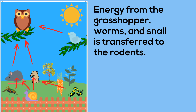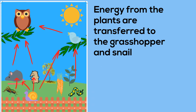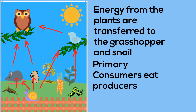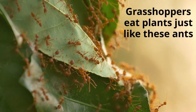Birds eat a larger variety of organisms including worms and also snails. The birds and rodents are secondary consumers because they consume primary consumers. Grasshoppers and snails are primary consumers because they eat producers like carrots, leaves of trees, and plants. They are considered primary consumers because they consume mainly plants, which are the producers.